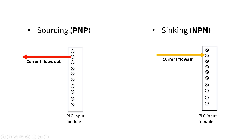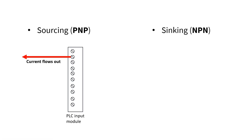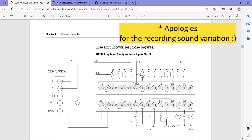For digital sensors, sinking and sourcing — the terms sinking (NPN) and sourcing (PNP) — refer to the direction in which the current flows through the input or output module of a PLC. A sourcing PNP module is when the current flows out of the PLC port, so the port acts as a source. A sinking NPN module is when the current flows into the PLC port — it kind of sinks into the module. This is usually mentioned in the documentation when working with different PLCs.